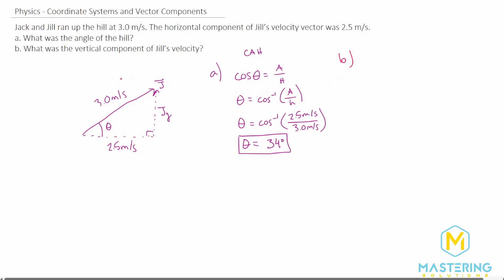In part B, we need to find the vertical component of Jill's velocity. So this part right here that we already kind of talked about. This is the opposite to the angle. So we could use sine, because we are looking for the opposite. We know the angle now, and we have the hypotenuse. So we have sine of the angle is equal to opposite over hypotenuse. We want to isolate opposite, so we'll move h over by multiplying both sides of the equation by h. So opposite is equal to h times the sine of theta.